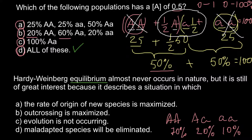There would be no selection against any genotype and no mating preferences between genotypes. We can cross out answer A — the rate of origin of new species is maximized — because this is the opposite of what happens. Such a population should simply be stable.